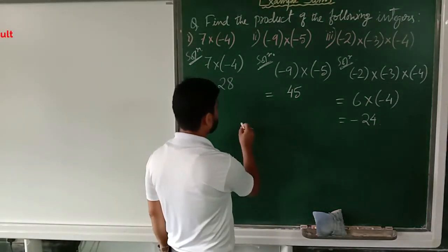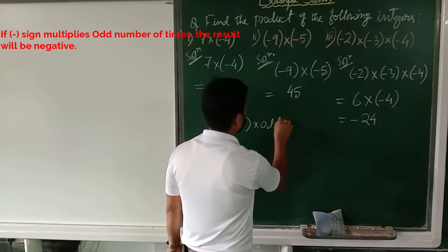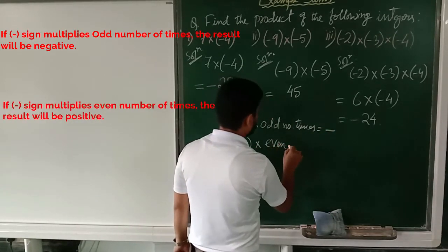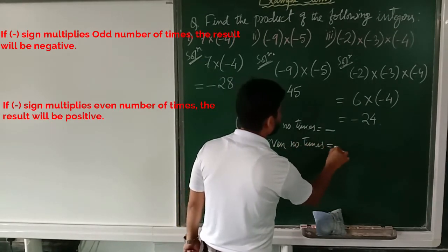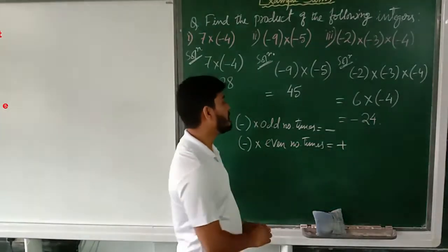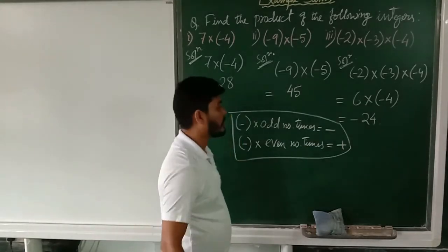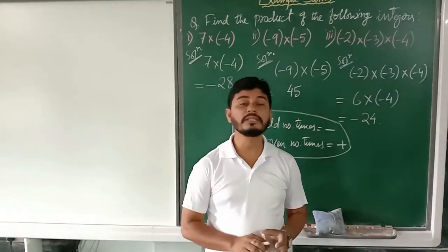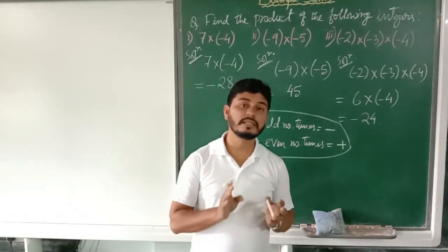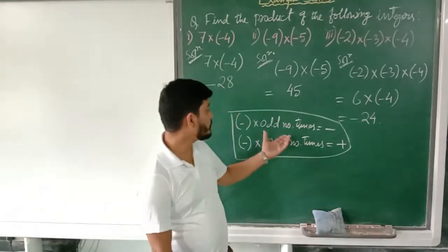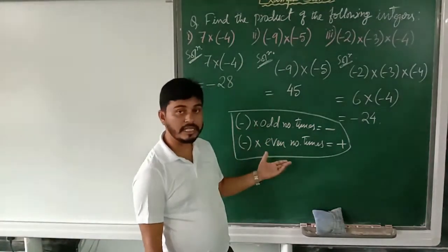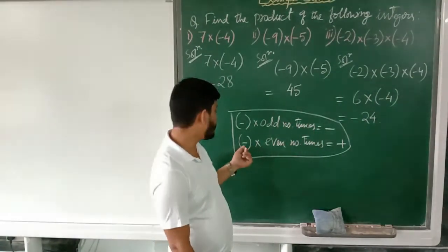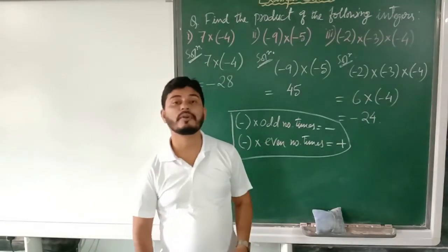To summarize: if the minus sign is multiplying an odd number of times then the result will be negative, and if the minus sign is multiplying an even number of times then the result will be positive. Only this thing you have to remember, and then it will be easy for you to do the sums — to find the products of positive integers and negative integers. If the minus sign multiplies an odd number of times the result will have minus, and if the minus multiplies an even number of times then the product will be positive.